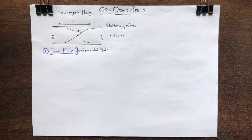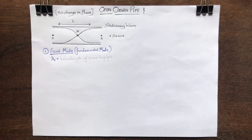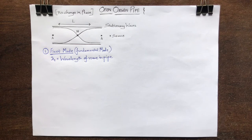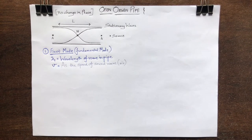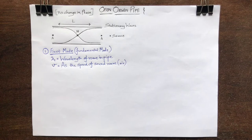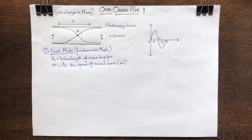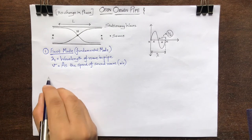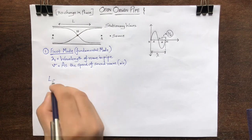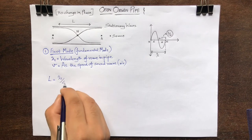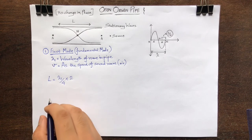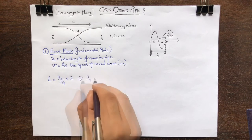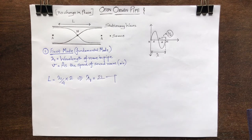Now, let us consider lambda 1 as the wavelength of the wave in the pipe and v as the speed of sound in air. As we know, the separation between two adjacent antinode and node is equal to lambda by 4. Therefore, the length of the considered organ pipe will be equal to lambda 1 by 4 times 2, which gives us the value of lambda 1 as 2L.